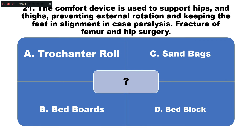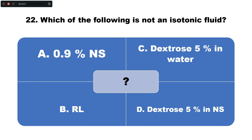Question number twenty-one: The comfort device used to support hips and thighs, preventing external rotation and keeping the feet in alignment in cases of paralysis, fracture of femur, and hip surgery is — option A: trochanter roll, B: bed boards, C: sandbags, D: bed block. The correct answer is option A — the trochanter roll.